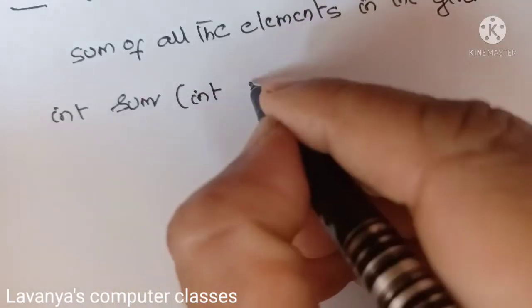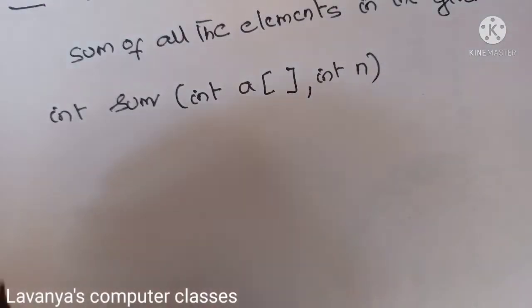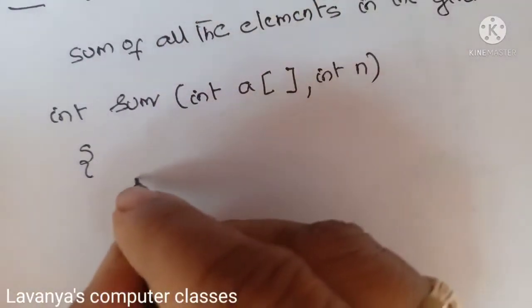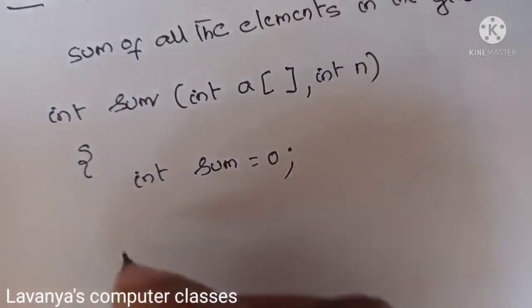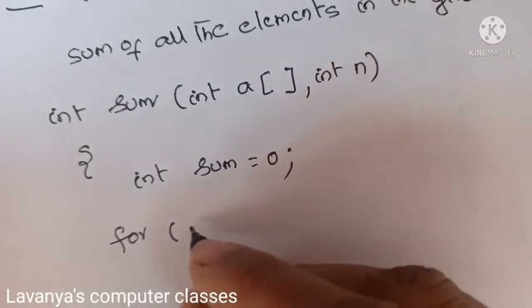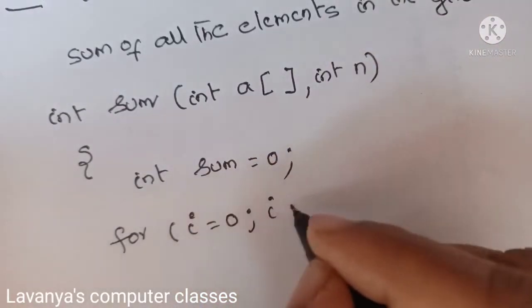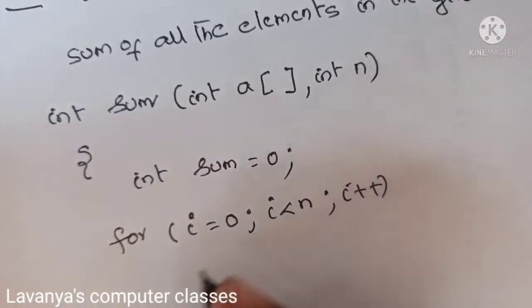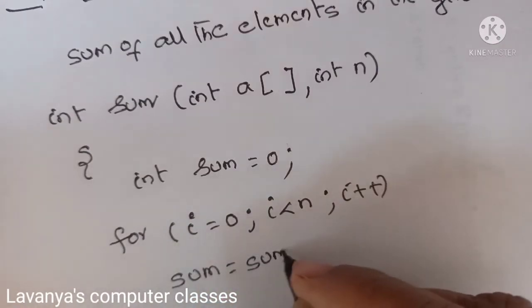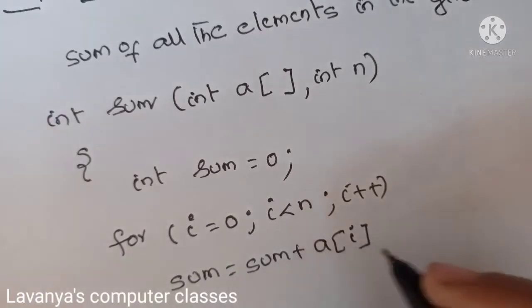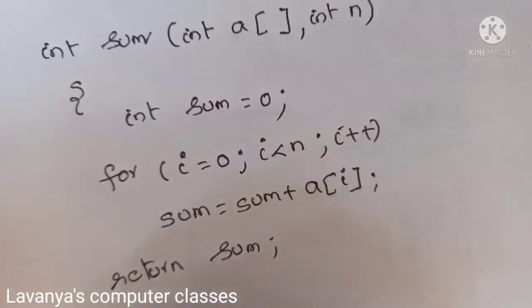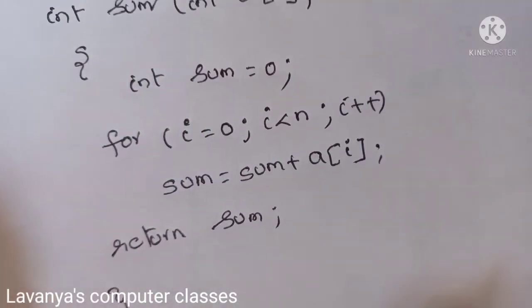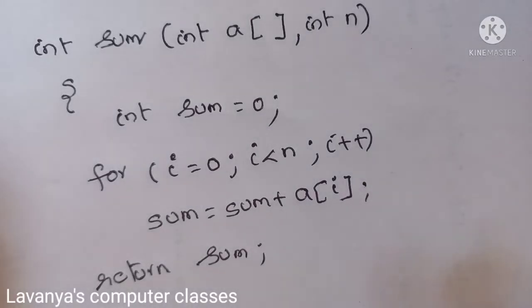The function takes an array 'a' of size 'n', so the parameters are int a and int n. Inside the function, I declare a variable sum = 0. Then I use a for loop: for i = 0, i < n, i++, and inside the loop I calculate sum = sum + a[i]. After the loop, I return sum. This completes the algorithm for the sum of all elements in the given array.